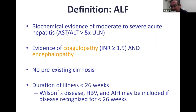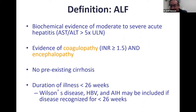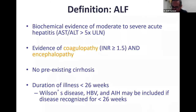Depending on the etiology, within 26 weeks patients start having elevated liver enzymes, coagulopathy, and encephalopathy. Some causes like acetaminophen — one of the most common in the U.S. — develop pretty quickly within a week, but some drug-induced liver injury or hepatitis B can take more than a few weeks.